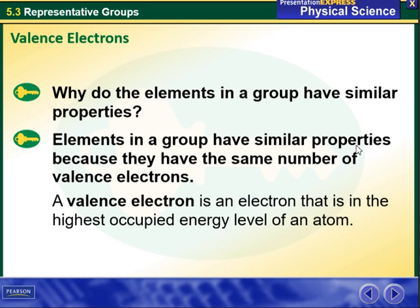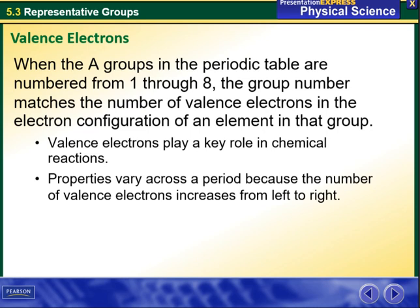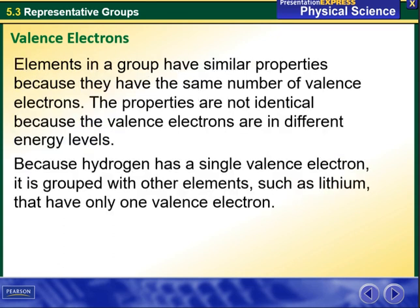We're going to start with defining the valence electrons. A valence electron is an electron that is in the highest occupied energy level of an atom. Valence electrons play a key role in chemical reactions. Properties vary across a period because the number of valence electrons increases from left to right.